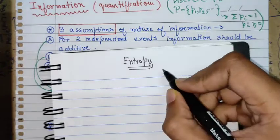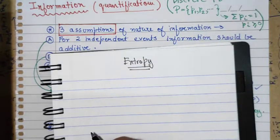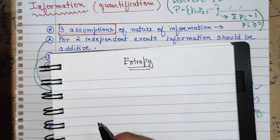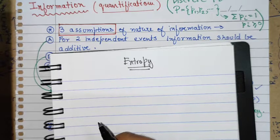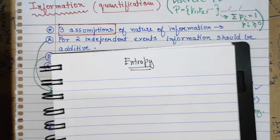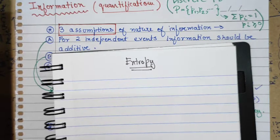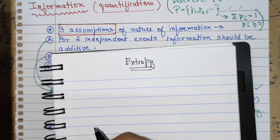Entropy plays a very important role in equilibrium cases and is always associated with disorder in a system. But in non-equilibrium systems, defining entropy is a bit of a tedious task. Further, in non-equilibrium systems where there are phase transitions, or if you have fractal or multi-fractal systems, the notion of entropy becomes completely messed up.